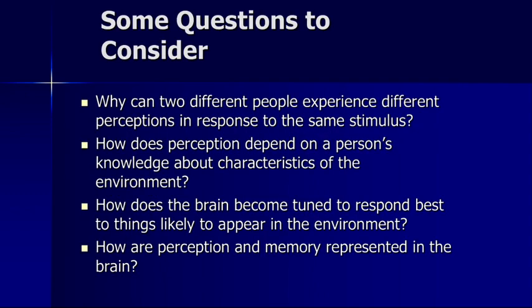Some questions we're going to consider throughout our discussion of perception: why is it that two different people experience different perceptions in response to the same stimulus? Some of us can see some things one way, some of us will see them the other. We'll talk about how this occurs with things called bidirectional images, in which you might see one thing and I might see another.